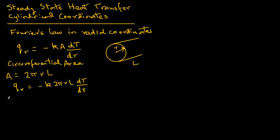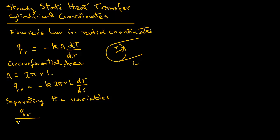To solve this equation we will use the procedure of separating variables — the variables being temperature and the radial term. We move everything related to radius to the left-hand side: Q_R times dr divided by 2πrl, and on the right-hand side we are left with minus k dT. Note that Q_R is a constant, as are 2, π, and l, so those are kept outside the integral.